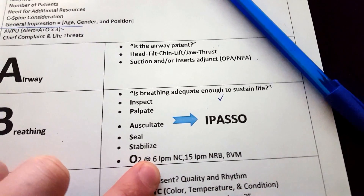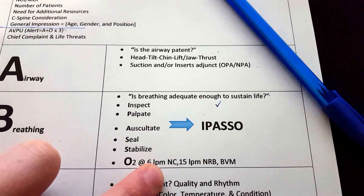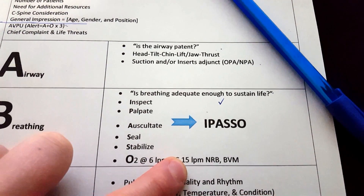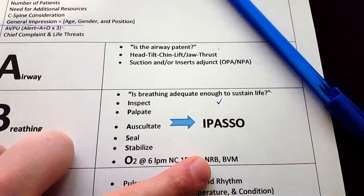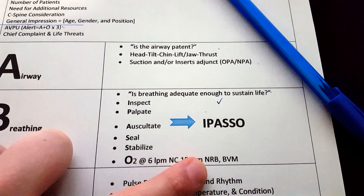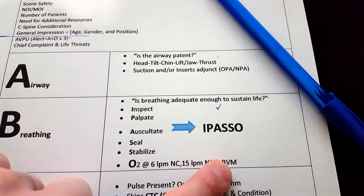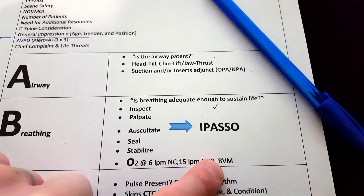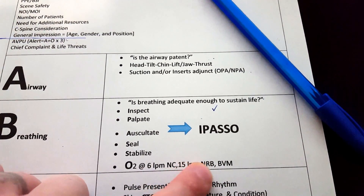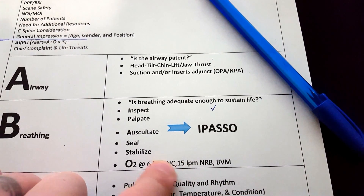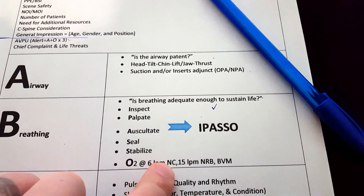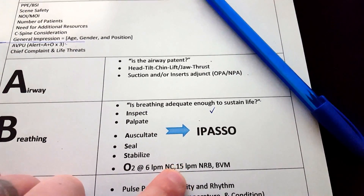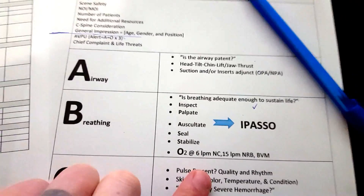For the NREMT, I would always go with 15 liters per minute via non-rebreather mask. It's a safe bet unless the patient obviously needs to be bagged with artificial ventilation. If not, just go straight to 15 liters per minute — you can't go wrong with that.